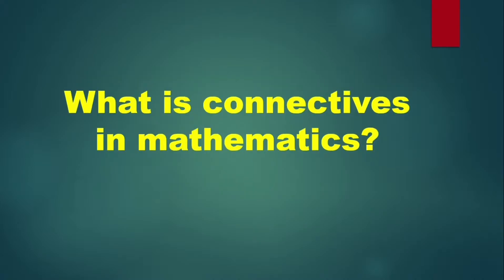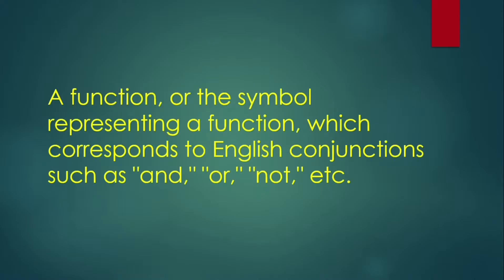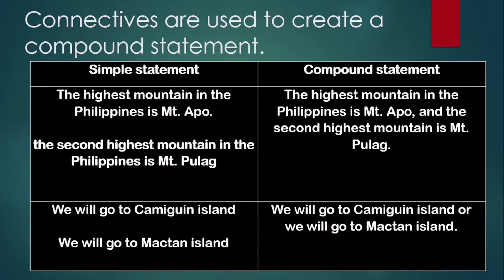Let us start with connectives. What is connectives in mathematics? A function or the symbol representing a function which corresponds to English conjunctions such as and, or, not, and etc. Connectives are used to create a compound statement. Here we have two simple statements, and we are going to use connectives or conjunctions in English to create a compound statement.